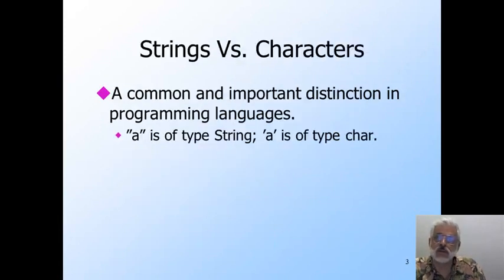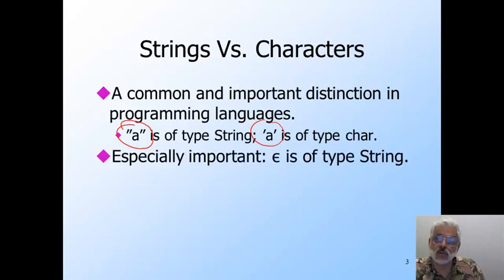A string is a sequence of zero or more characters. In most programming languages, double quotes are placed around a string, and single quotes around a character. The distinction is most important when the string is of length one, because then it looks just like a character if you don't do something like double-quoted to indicate its type. Most importantly, epsilon is the way we represent the empty string. In most languages, the way to represent the empty string is by double quotes with nothing in between them, like this.